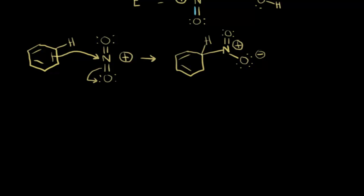Let me highlight those electrons. These pi electrons are attracted to the positive charge — nucleophile to electrophile — and those pi electrons form this bond to our nitro group. We took away a bond from this carbon, so that's where our plus-one formal charge is going.